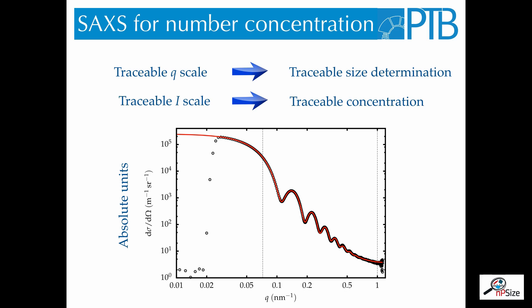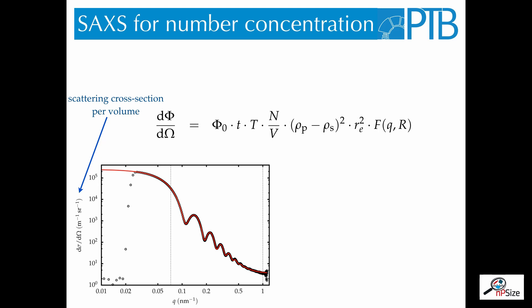So far, we have achieved a traceable Q-scale and that gave us a traceable size determination of the nanoparticles. We can also make the intensity scale of the scattering curve traceable and this will give us a traceable concentration measurement. This means we have to put the intensity scale on absolute units. Absolute units, in this context, is the scattering cross-section per volume. This is then an intrinsic material property.